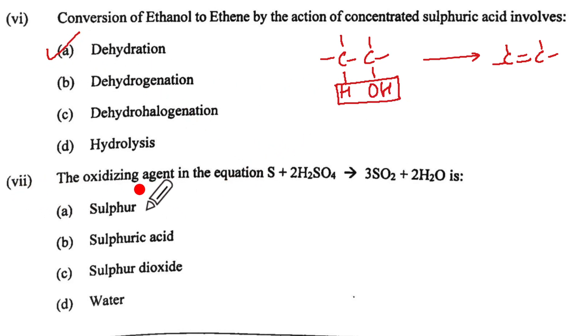Let us come to the seventh subpart. Oxidizing agent in equation S plus H2SO4 gives 3SO2 plus 2H2O is. Now here sulfur is not the oxidizing agent, it is concentrated H2SO4 because decomposition of H2SO4 releases nascent oxygen which is going to oxidize sulfur to sulfur dioxide. So that is going to be oxidizing agent is B which is sulfuric acid.